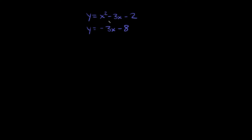Let's start with this one right here. We have y is equal to x squared minus 3x minus 2 on top, and y is equal to negative 3x minus 8 on the bottom. The first thing we're going to do is subtract one equation from the other by lining up the two equations. So I'm going to write the first one as y equals x squared minus 3x minus 2, and then line up the x terms and constant terms of the second one: y equals negative 3x minus 8.